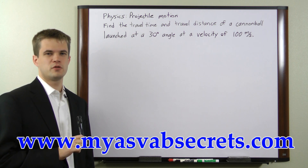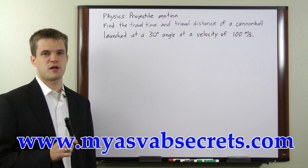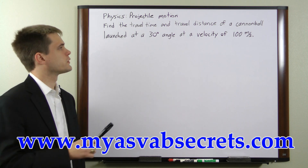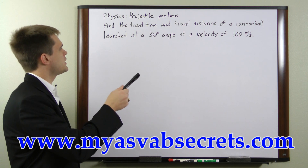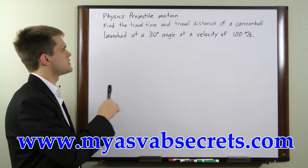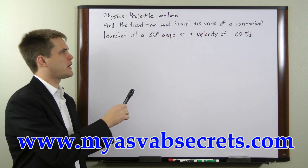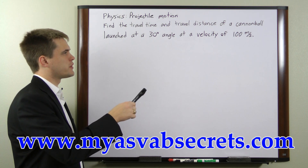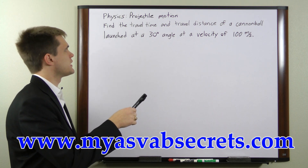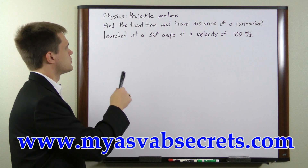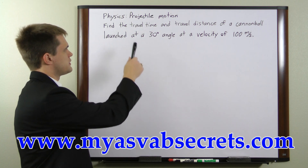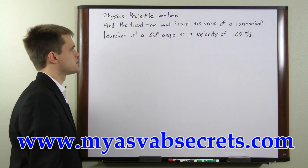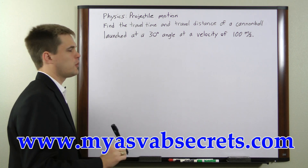What we have here is a two-dimensional projectile motion problem. We're told that a cannonball is launched at a 30-degree angle and at a velocity of 100 meters per second, and we're asked to find the travel time and travel distance of the cannonball.